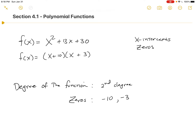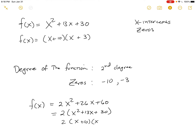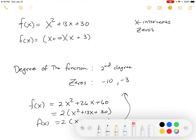Notice these zeros would be the same if I changed the function to 2x squared plus 26x plus 60. We factor out the 2, and since 2 is never zero, the zeros are still negative 10 and negative 3. The point is there's an infinite number of polynomials with the exact same zeros, so when we find them we're just finding one representation.